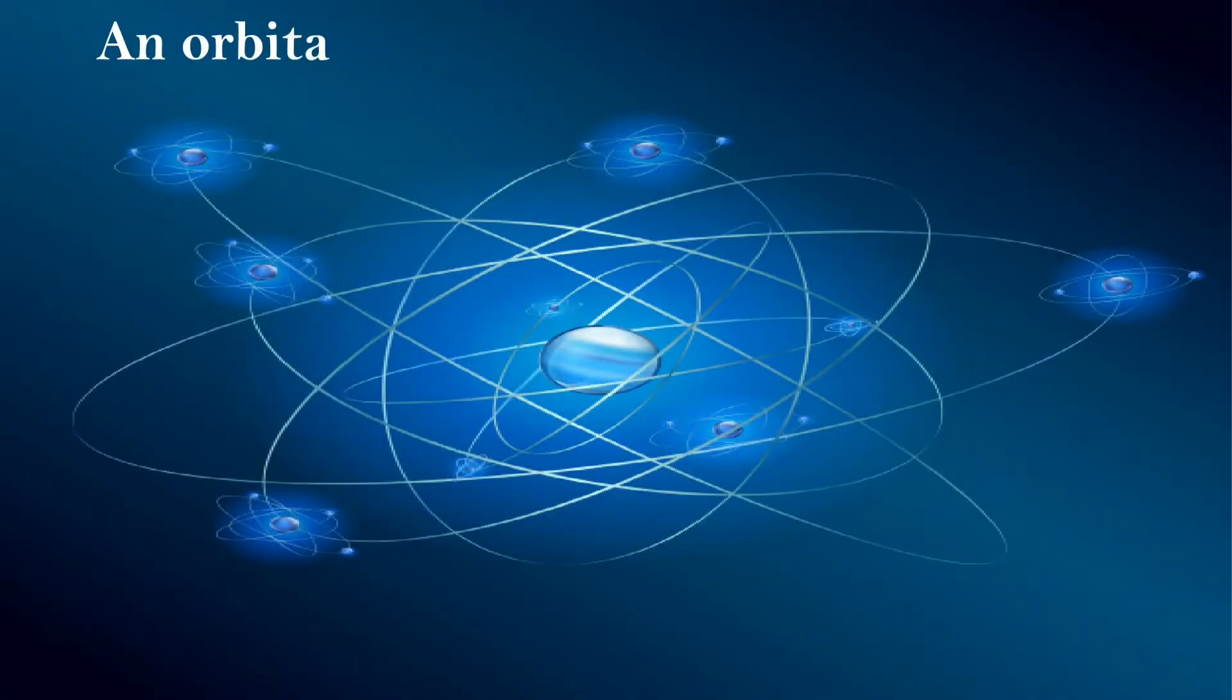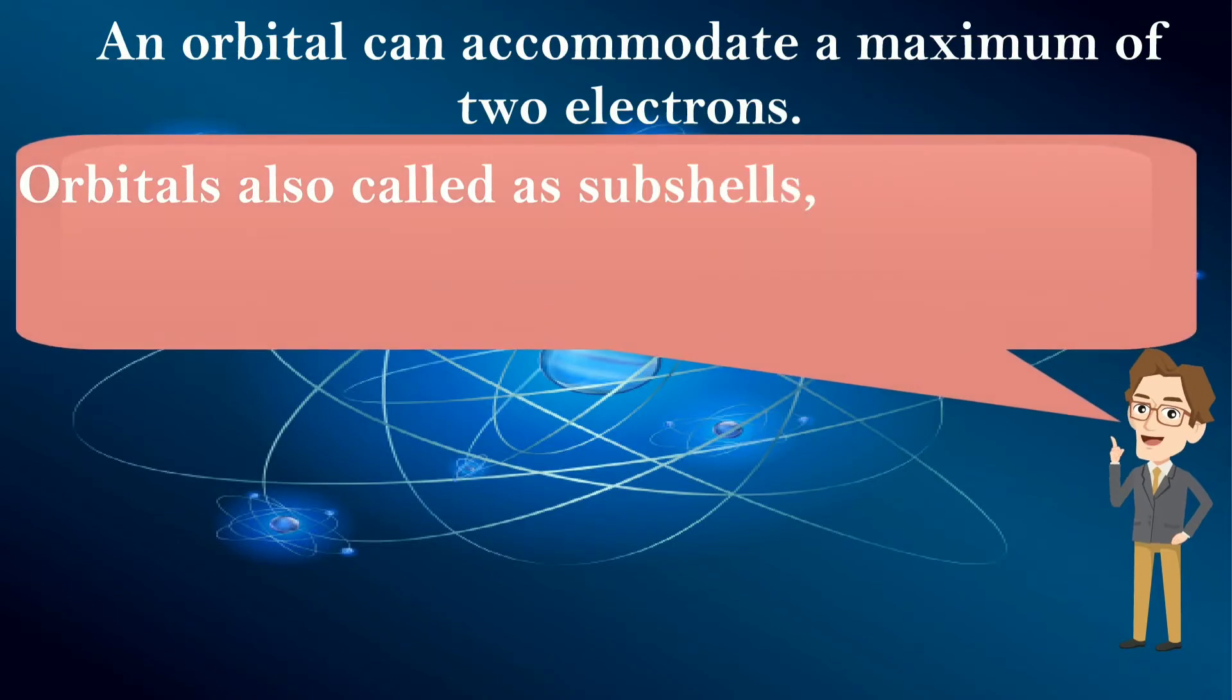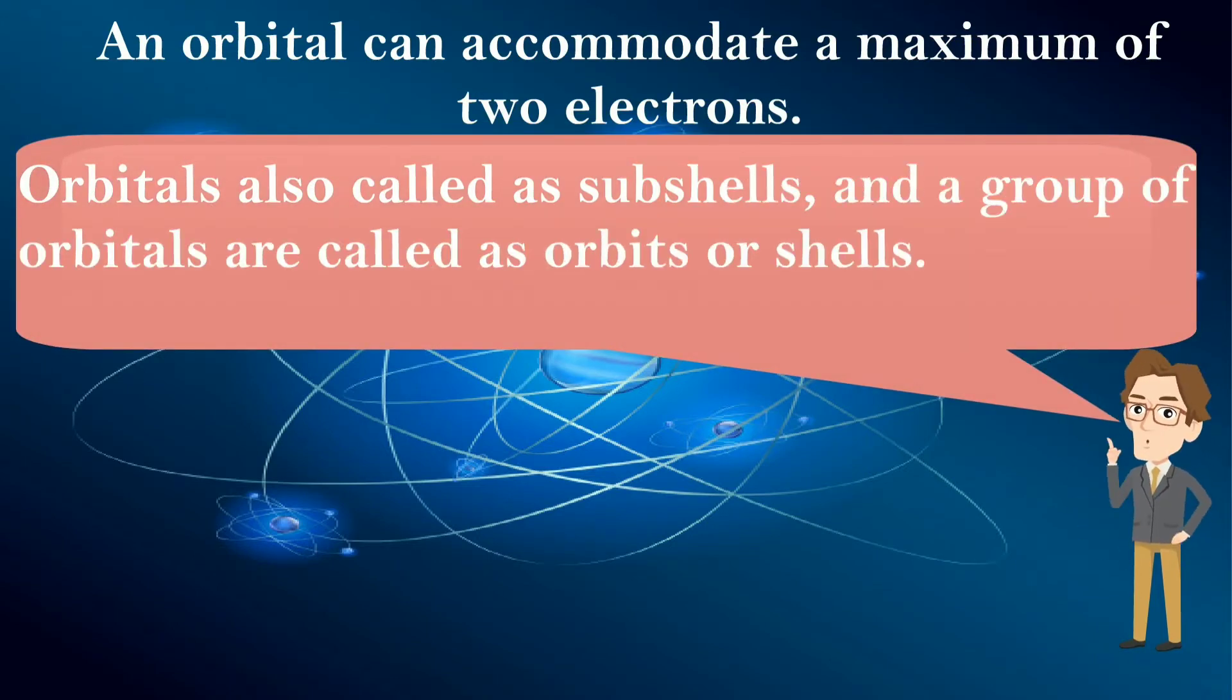An orbital can accommodate a maximum of two electrons. Orbitals also called as subshells, and a group of orbitals are called as orbits or shells.